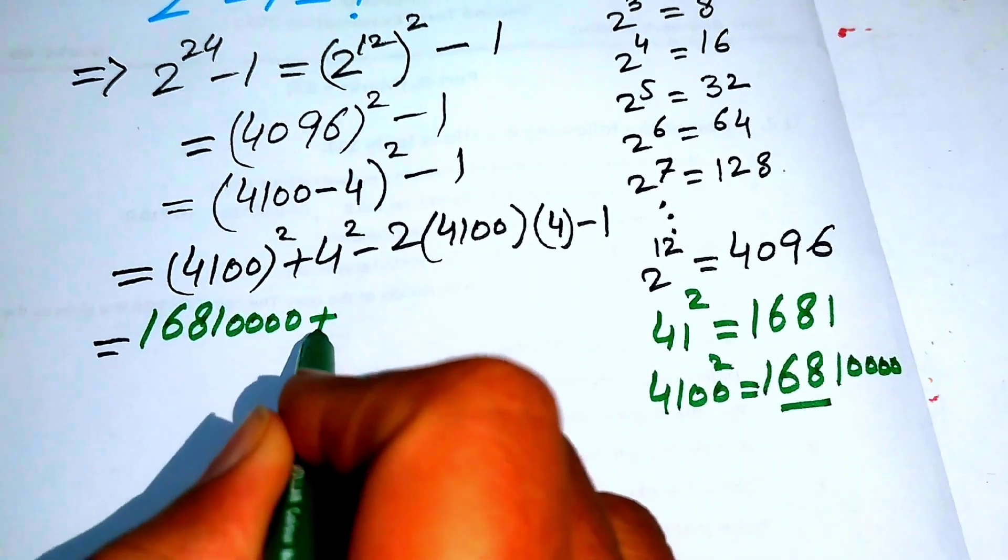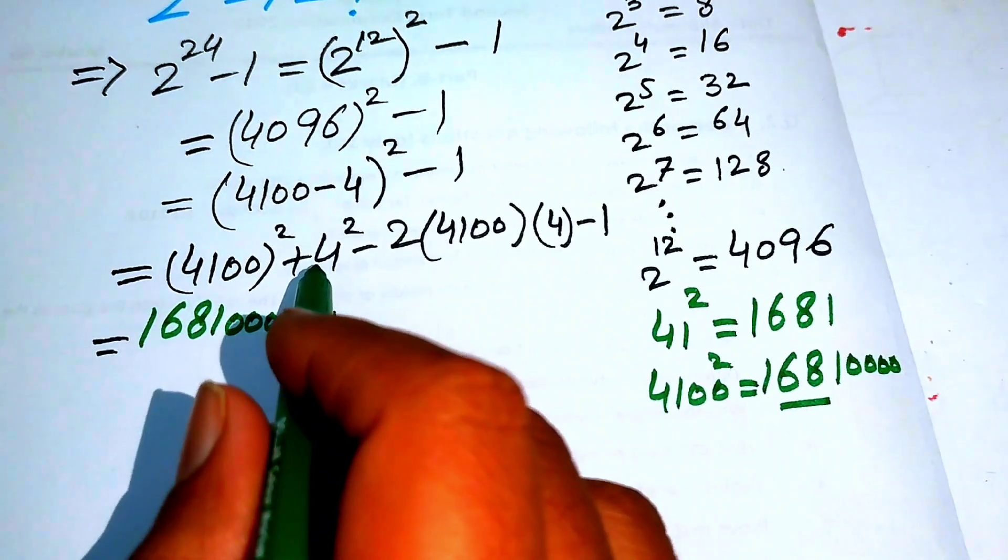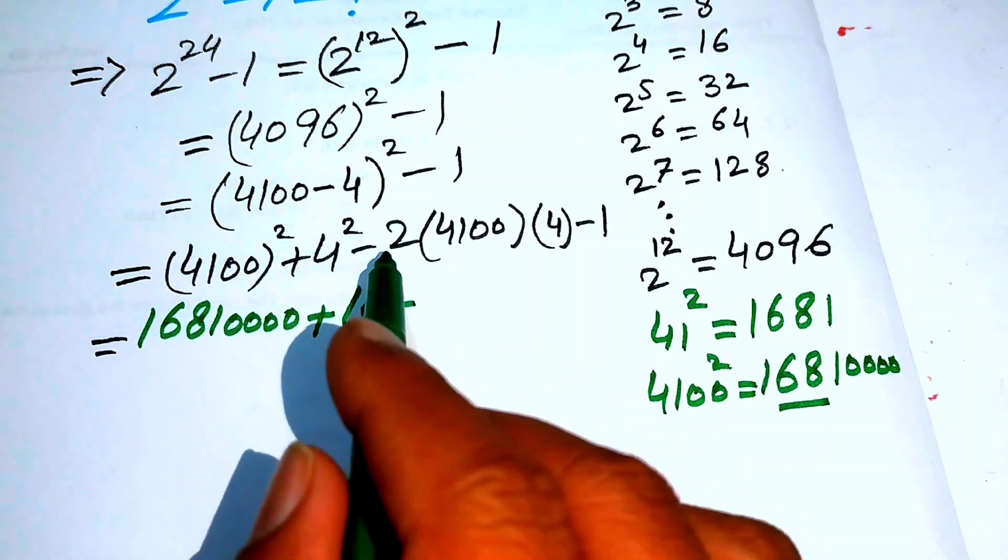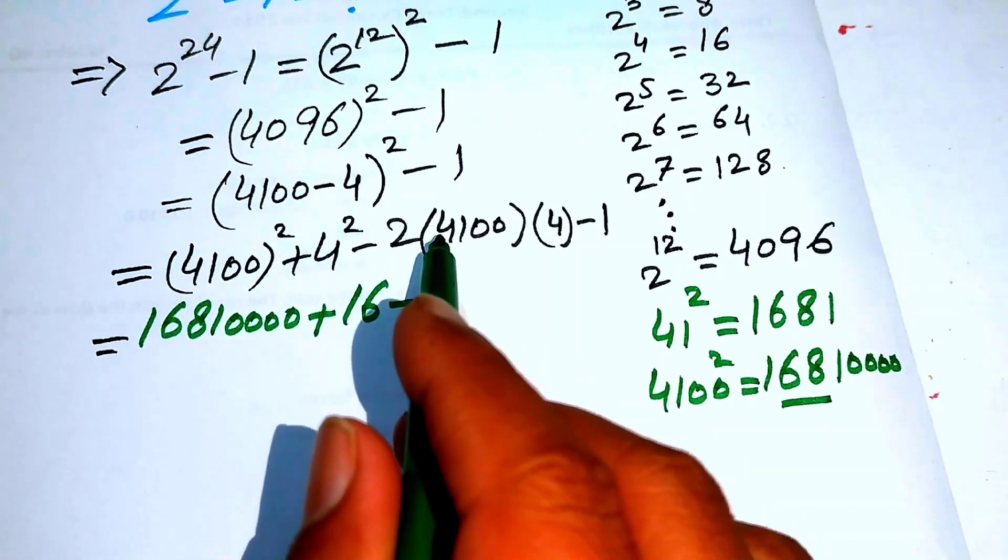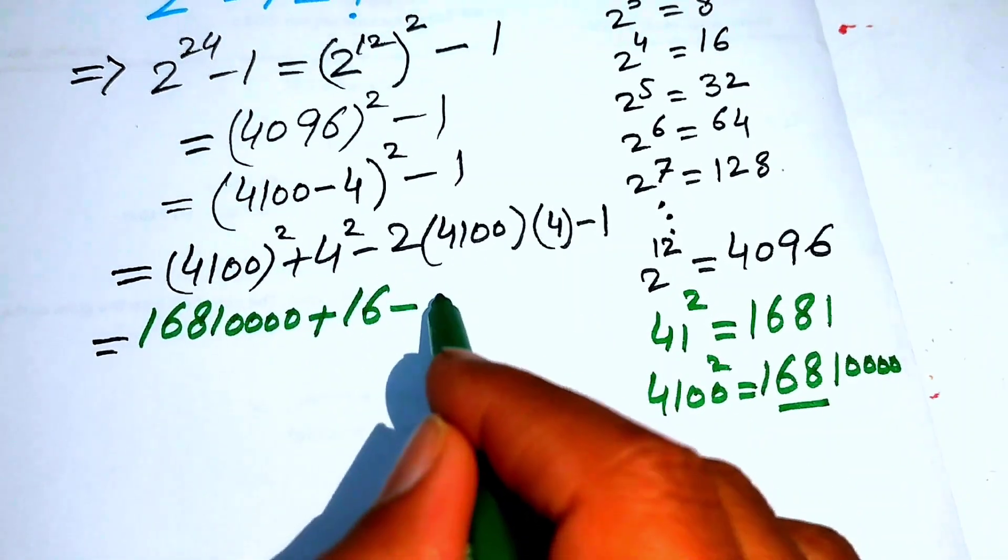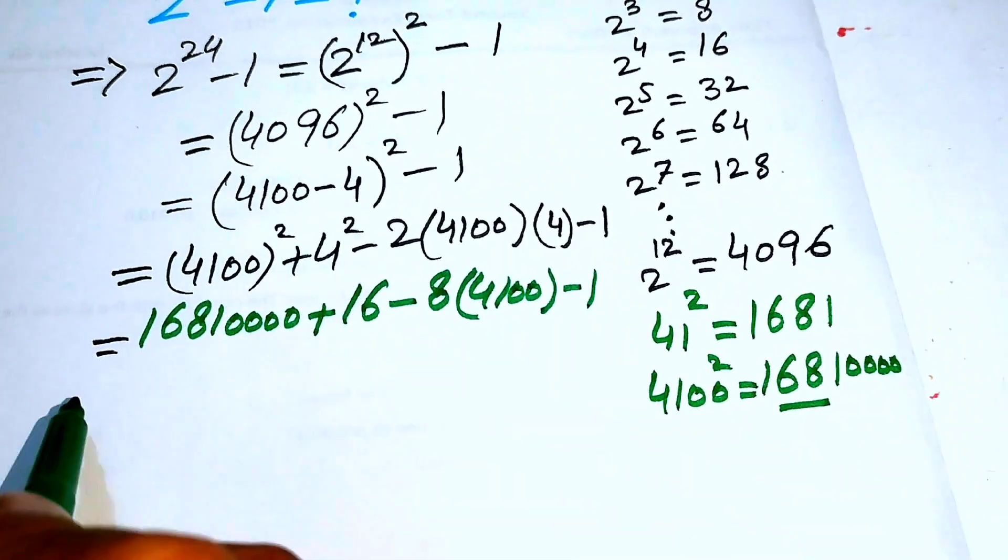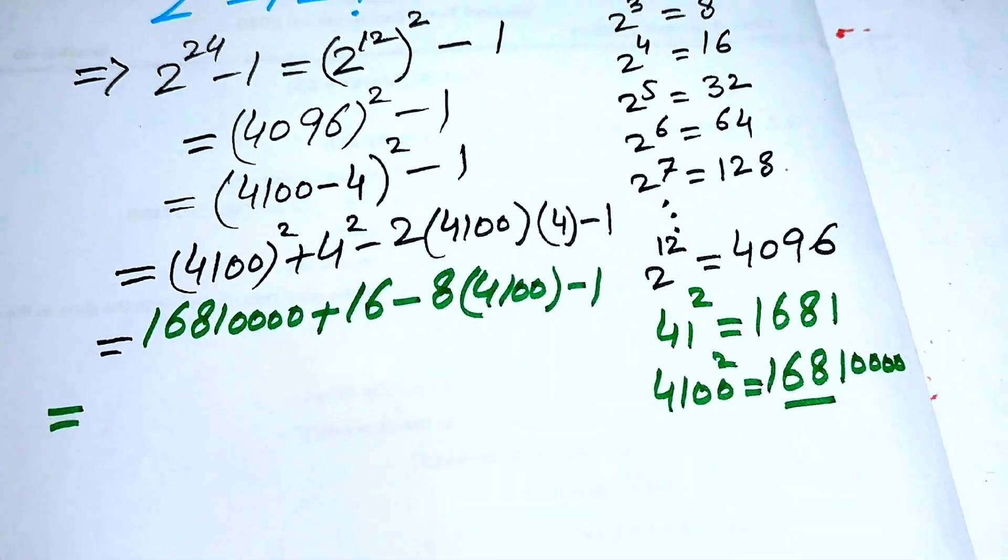Plus the square of 4 equals 16, and minus 2 times 4100, which is 2 times 4 becomes 8 into 4100, and minus 1. So now here we make a little bit simplification.